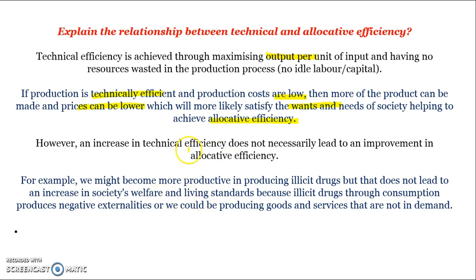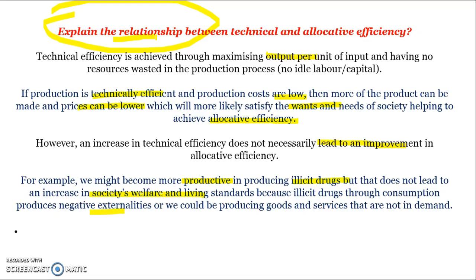However, an increase in technical efficiency does not necessarily lead to an improvement in allocative efficiency. For example, we might become more productive in producing illicit drugs, but that does not lead to an increase in society's welfare and living standards, because illicit drugs cause negative externalities that can harm society. So when explaining the relationship, cover the positive link — technical efficiency leads to lower prices and satisfies more wants and needs — and the negative link: technical efficiency doesn't imply we're producing what society values, and therefore may not maximise allocative efficiency.